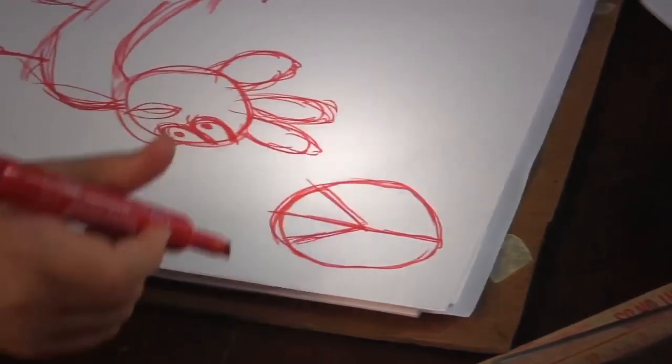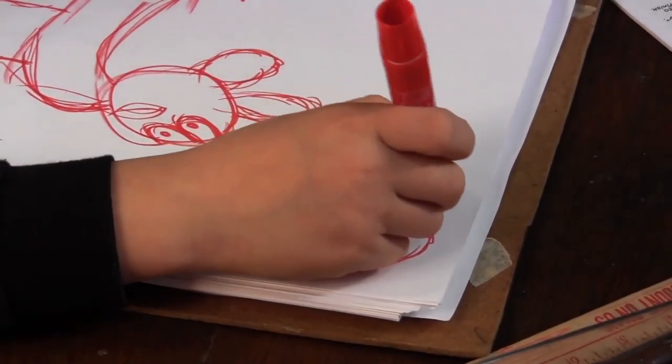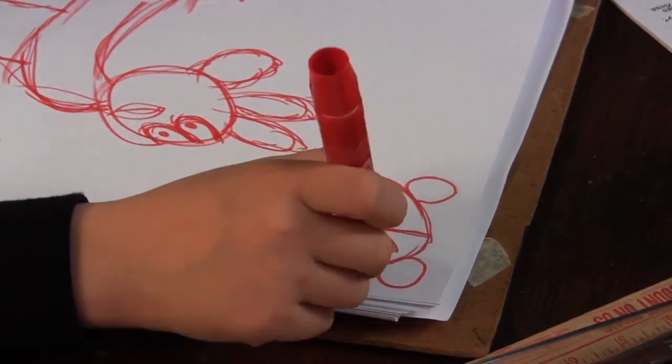I'm going to turn my peace sign into a bear. There's his eyes. There's his mouth. There's his oval nose. There's his ears.